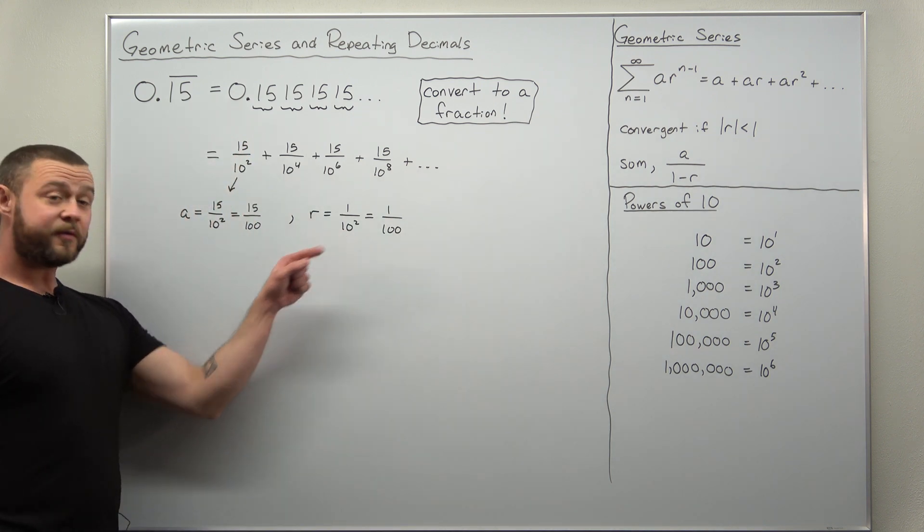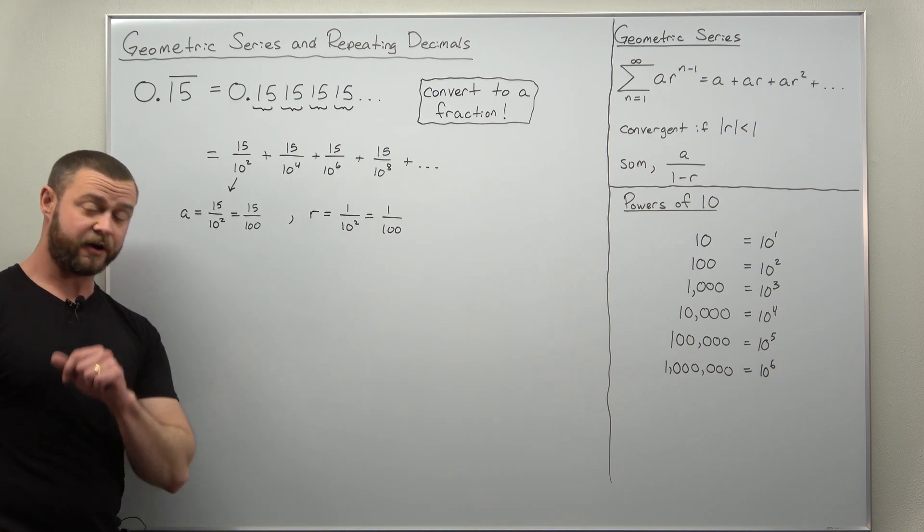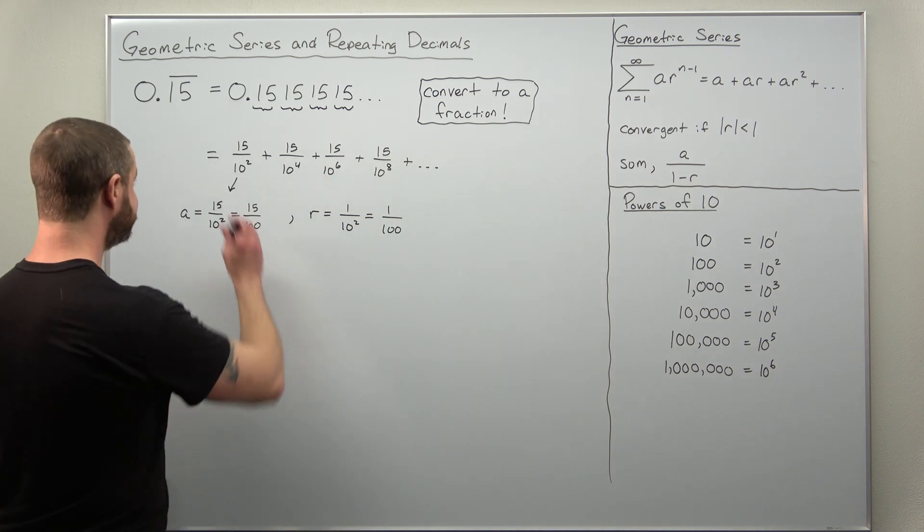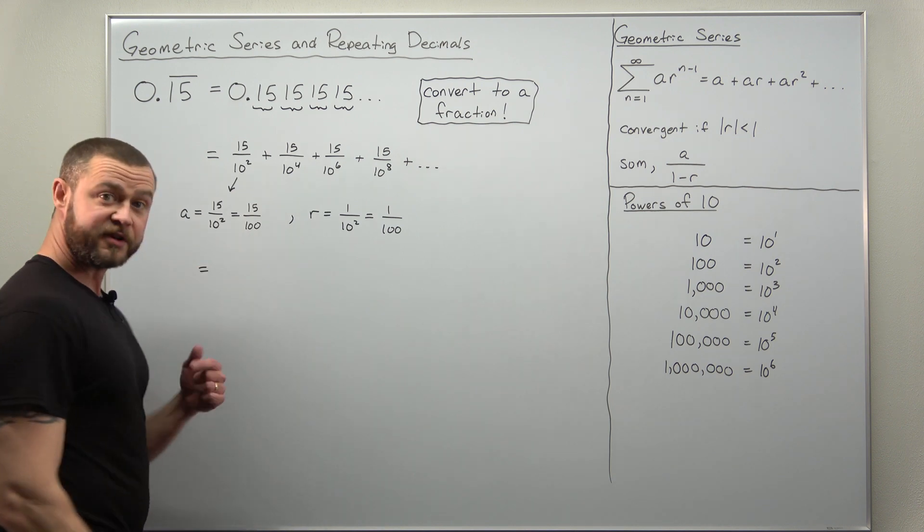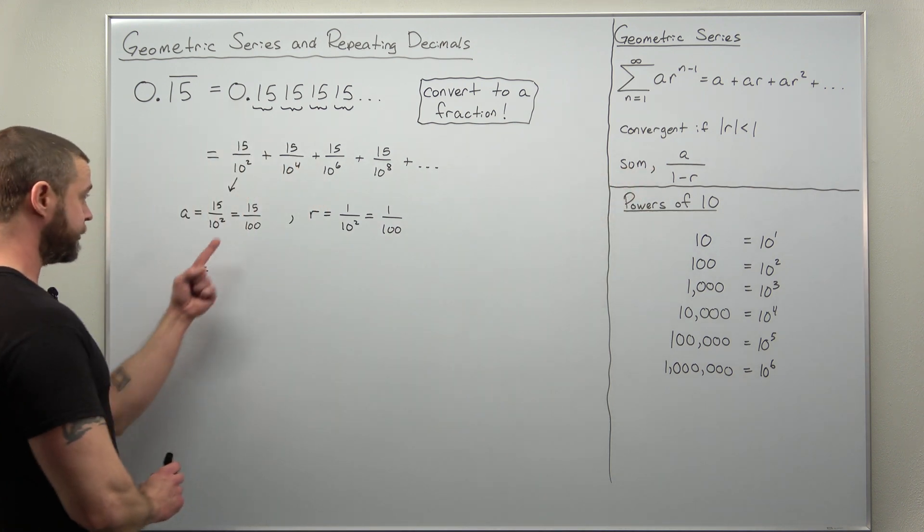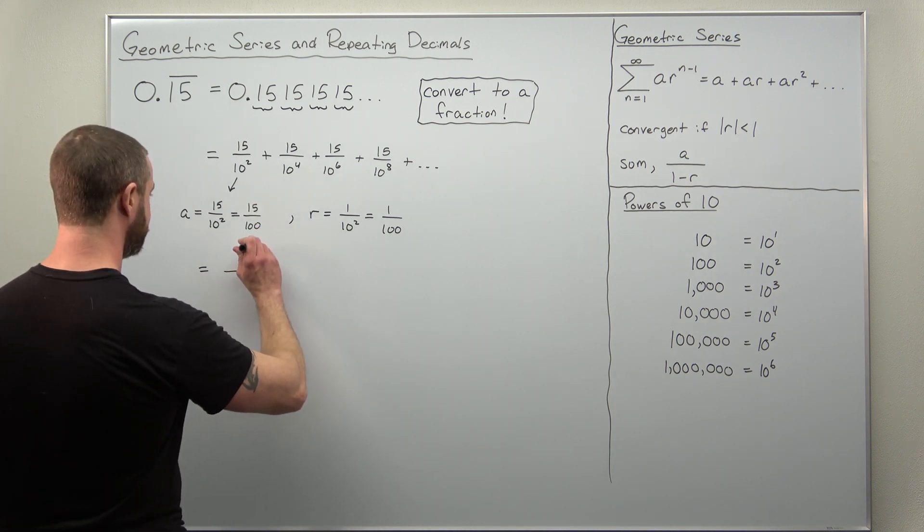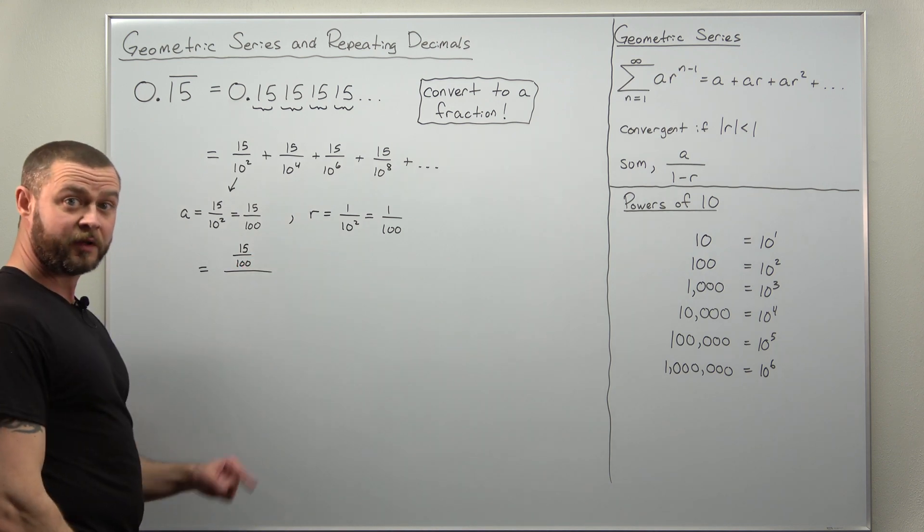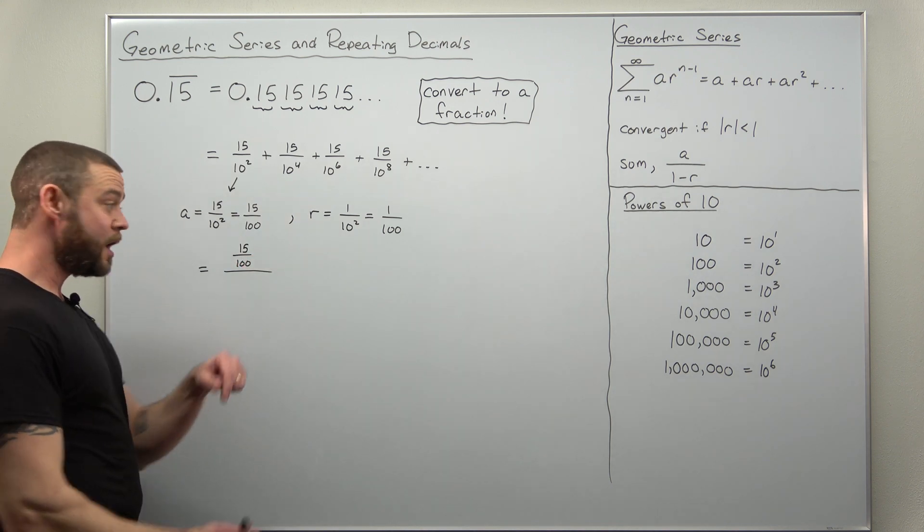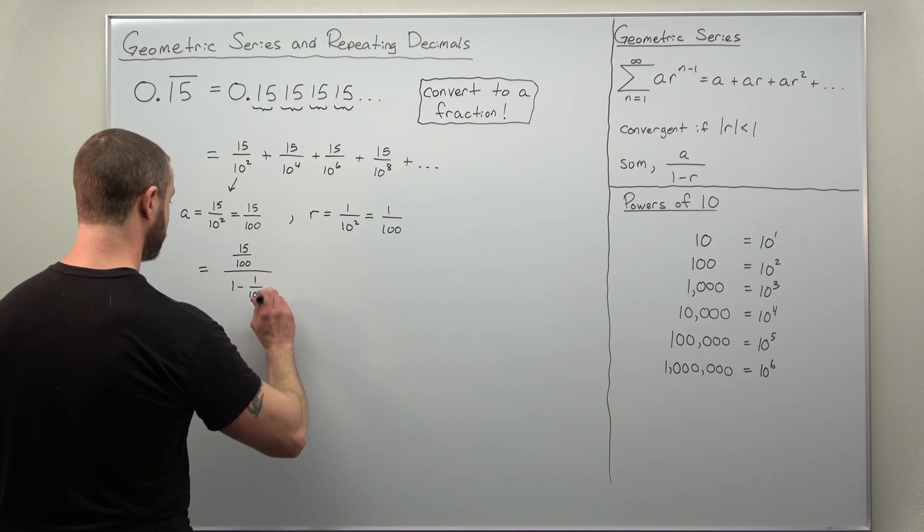Since this value of r is less than 1 this geometric series converges. So we can look at the sum and we just make use of our simple sum formula here. A divided by 1 minus r and plug in our values. We have a as 15 over 100. Sum formula gives you 1 minus r. 1 minus 1 over 100.